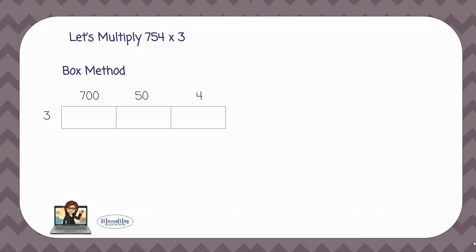Now let's fill the box. We'll do 700 times 3 to get our first box. Here's a little trick on this one. You can do 7 times 3 which gives you 21 and then you're going to add two zeros. I'm adding two zeros because 700 had two zeros. So 7 times 3 is 21 and then two zeros. That's going to give me 2,100.